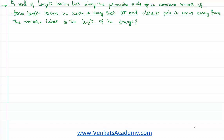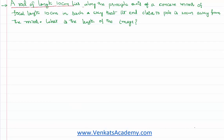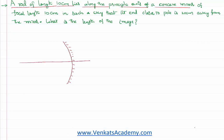Hello everyone, welcome to the video lesson. We are solving a problem from ray optics. The problem is: a rod of length 10 centimeter lies along the principal axis of a concave mirror. Let us draw what that means. This is a concave mirror, and this is its principal axis, and the rod of length 10 centimeter is lying on the principal axis.